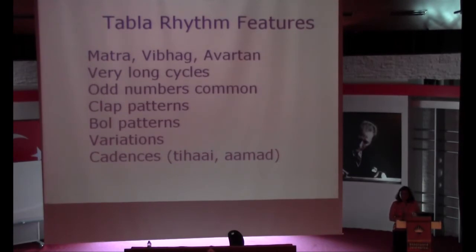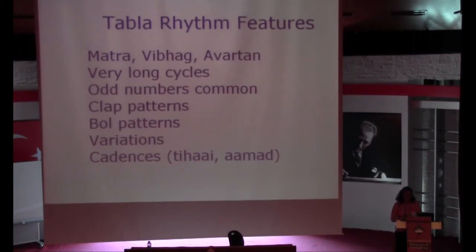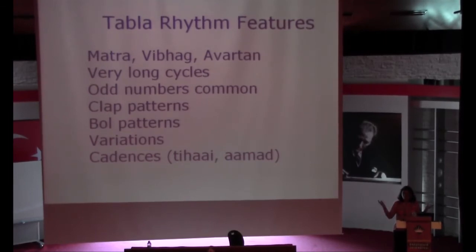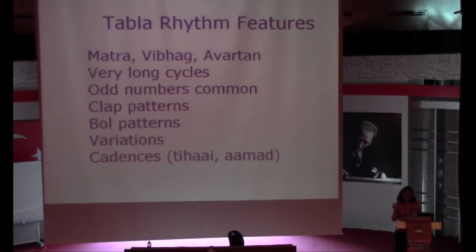Tabla rhythms have some special features. The pulse or beat is identified with the matra, and tabla rhythms also have vibhag for sections, avartan for a complete repetition of a cycle. Some features include very long cycles, odd numbers being very common, and tap patterns to define salient points. The bol patterns give the theka — the basic skeleton — and then variations are played. Cadences are very important: the tihai, where you play a little phrase three times to indicate you're ending a section and coming to a new one.